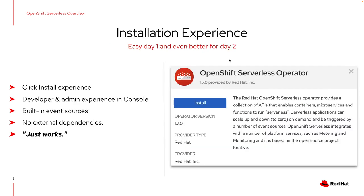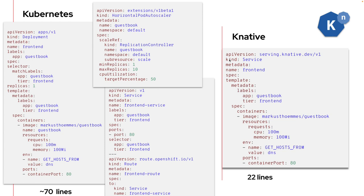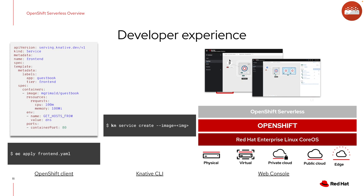The official operator provides a quick and simple installation process, and it has been tested for really good integration with other Red Hat OpenShift products. Both Knative Serving and Knative Eventing consist of a series of components packaged as containers and a set of custom resource definitions, which are actually the APIs for OpenShift Serverless. The primary way to interact with OpenShift Serverless is through YAML files, where you declaratively define the intended state of your serverless applications. There is also the imperative way — either by using the Knative CLI or through the Red Hat OpenShift web console.